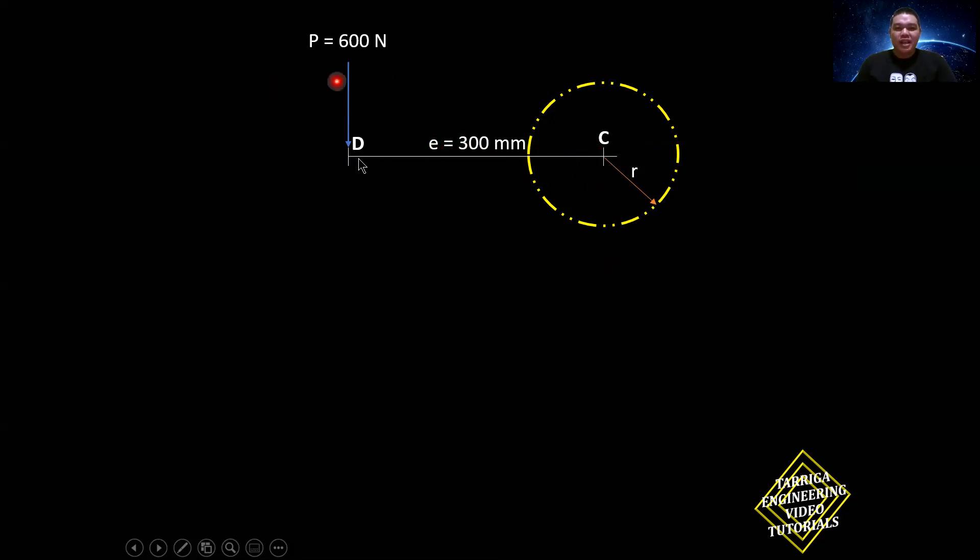T equals P times e, 600 times 300 mm. You can determine that by calculator: 180 newton meter.